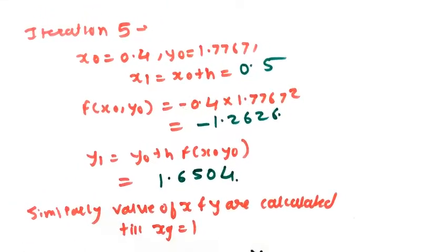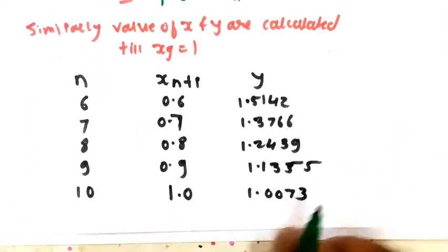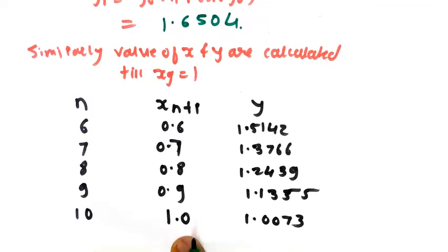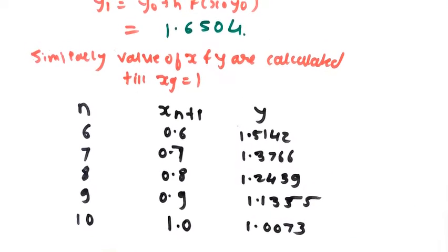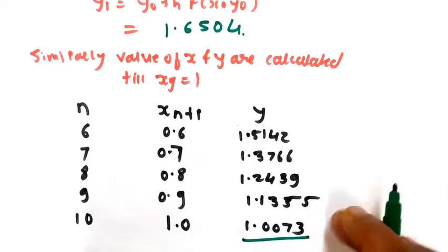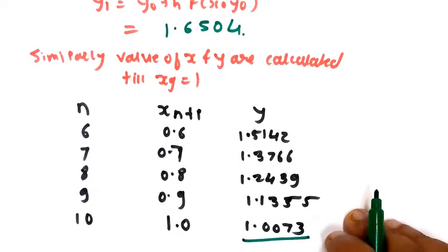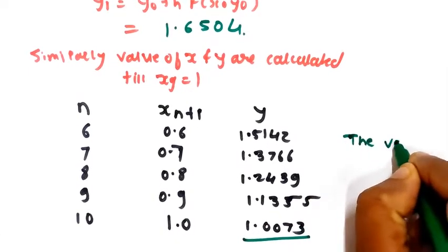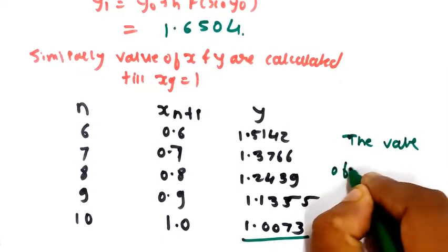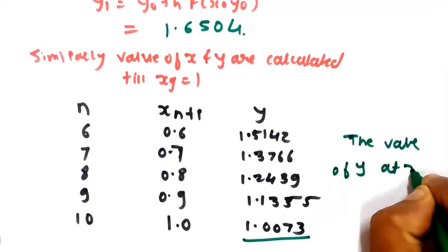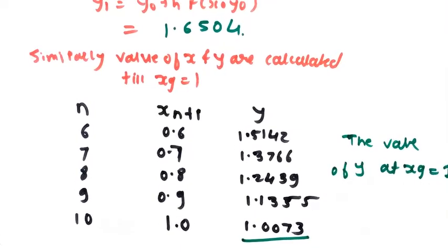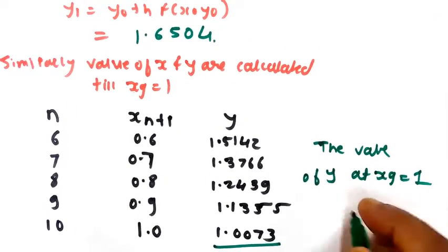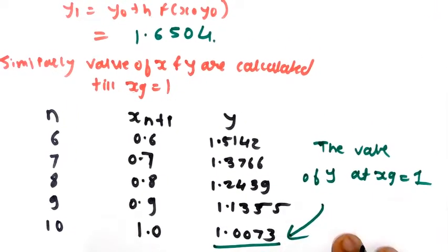Repeat the same steps through to iteration 10. At the last iteration (iteration 10), you get the value of y. At x_n = 1, the value of y is 1.0073.